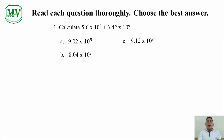C: 9.12 x 10 raised to the power of 8. Or D: 8.02 x 10 raised to the power of 8. Based on the problem given, we can already have an idea of what our answer will be. You can see that the two exponential notations have the same power of 9. And if the sum or difference of the coefficients does not exceed 10 or go below 1, then our answer must also have the same power of 9.